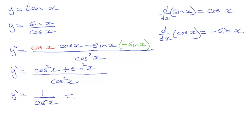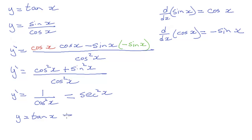Sine squared plus cosine squared — or cosine squared plus sine squared — is always equal to 1. That's an identity we use all the time. So the derivative is 1 over cosine squared of x. What is 1 over cosine squared? That's secant squared of x. So given y equals tan x, then y prime, or the derivative of y, is secant squared. That's the proof of the derivative of tan.